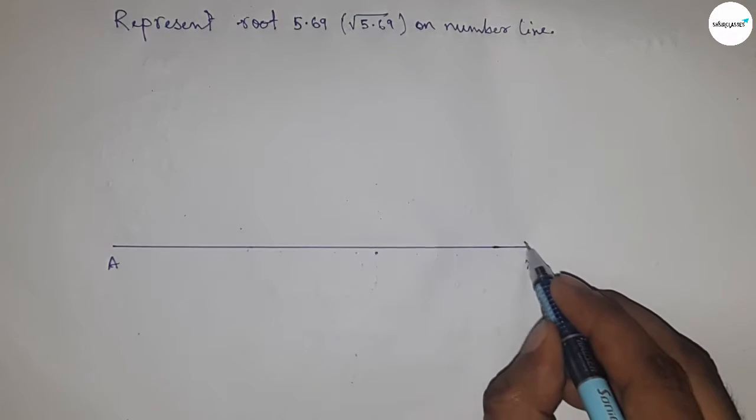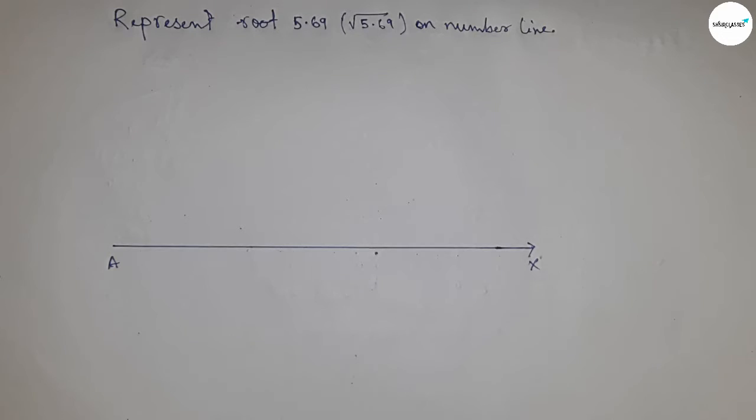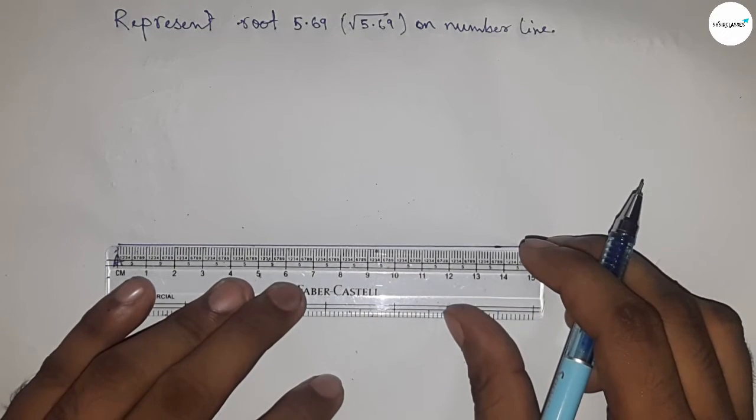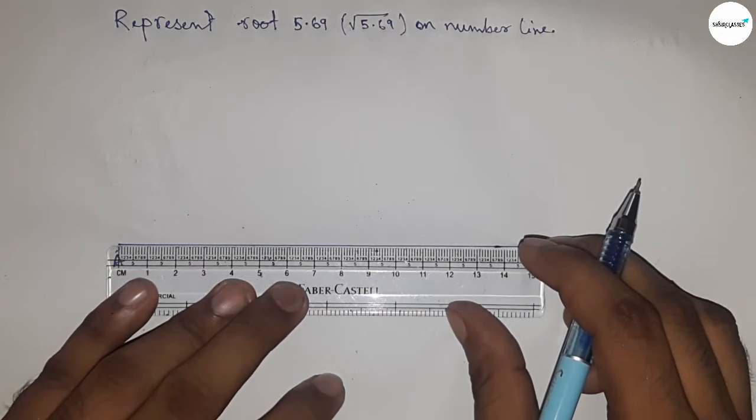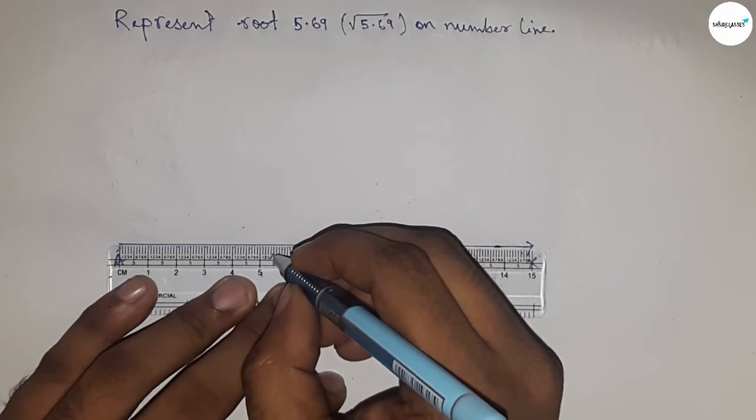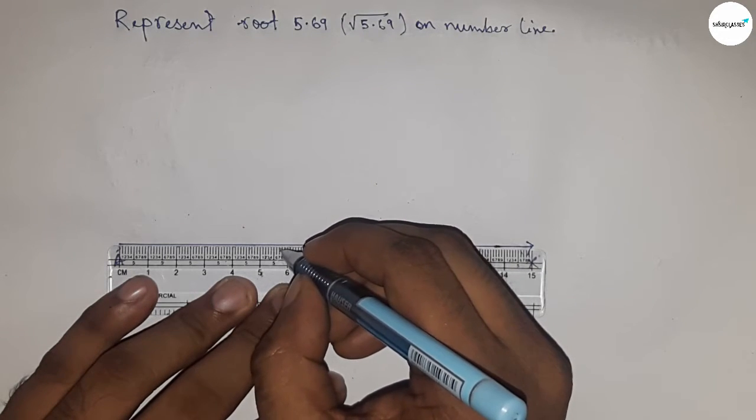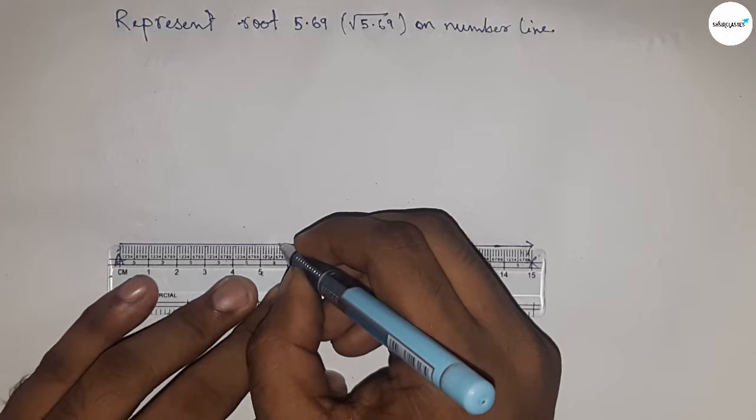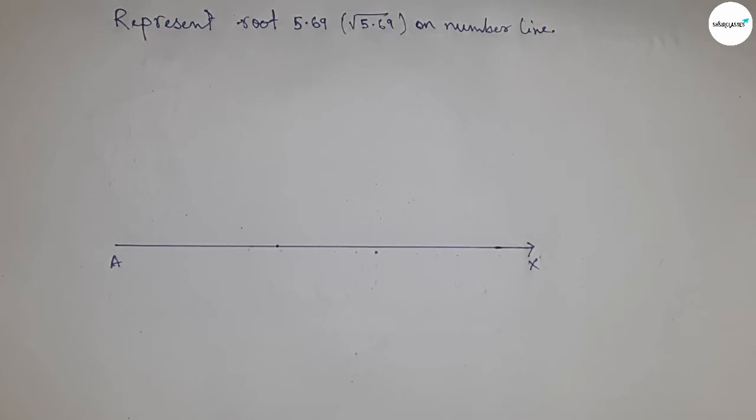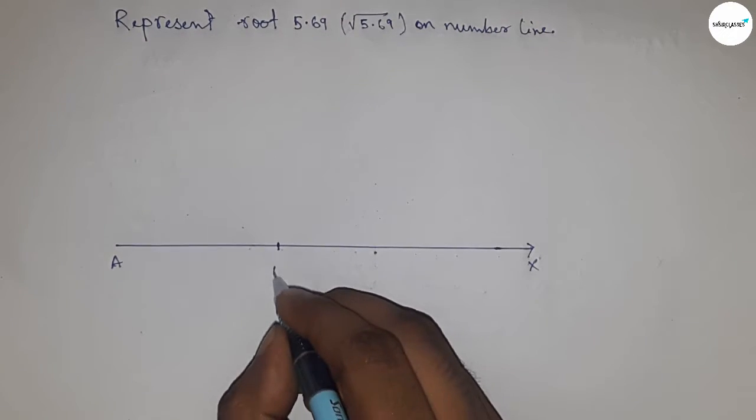First of all, drawing a line of any length and this is AX line. Next, taking 5.69, approximately 5.7, so this is approximately 5.7.